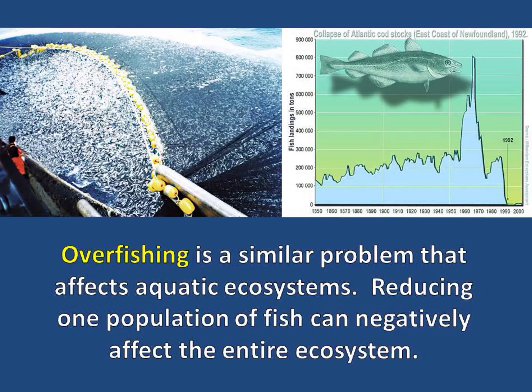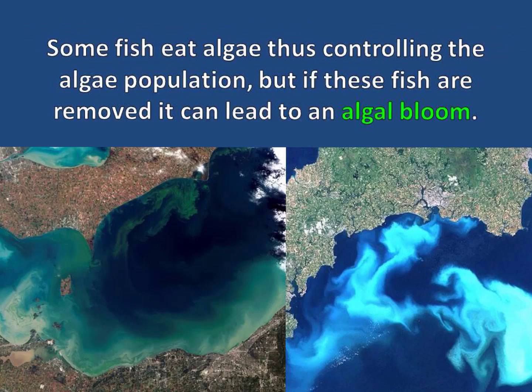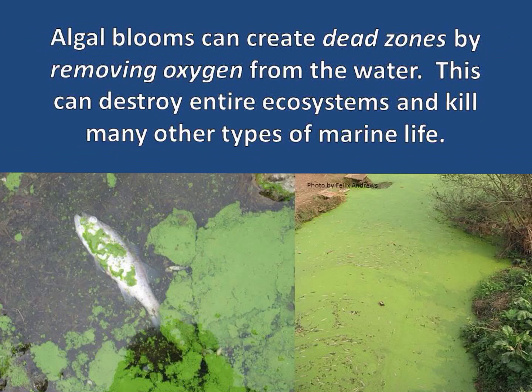Overfishing is a similar problem that affects aquatic ecosystems. Reducing one population of fish can negatively affect the entire ecosystem. Some fish eat algae, thus controlling the algae population. But if these fish are removed, it can lead to an algal bloom. Algal blooms can create dead zones by removing oxygen from the water, which can destroy entire ecosystems and kill many other types of marine life.